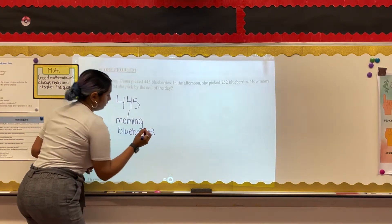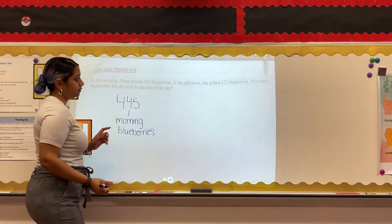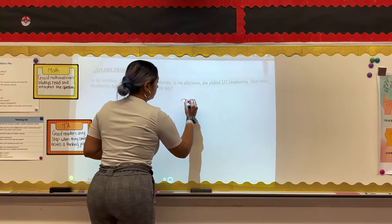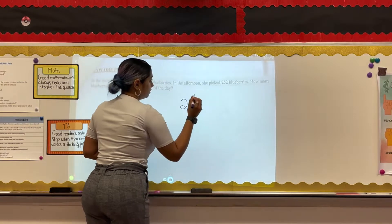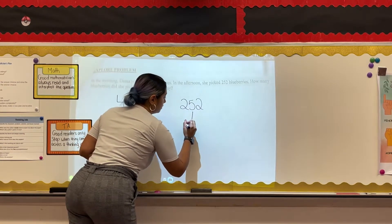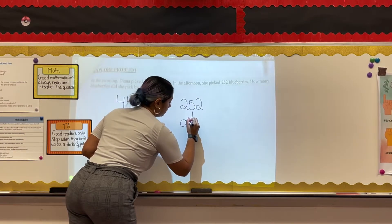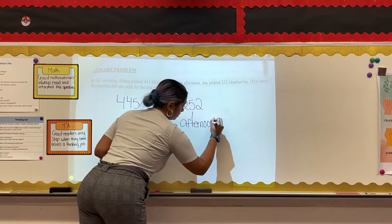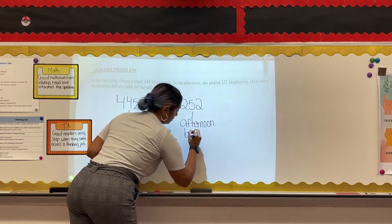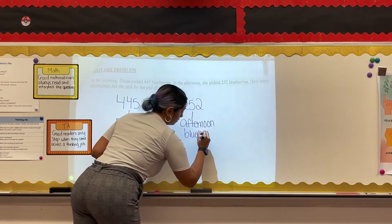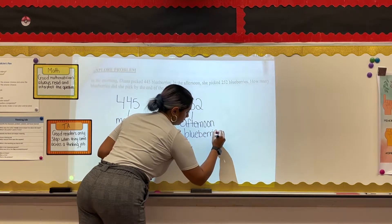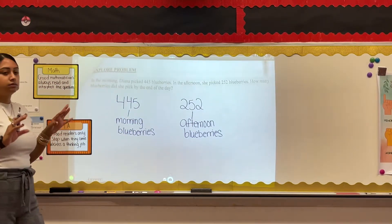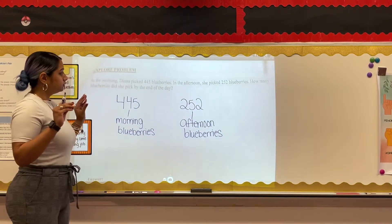I know that Diana is picking blueberries — she picks them in the morning and also in the afternoon. I need to know how many she picked all together. This problem is asking for the total blueberries she picked by the end of the day. So my plan is: morning blueberries = 445, afternoon blueberries = 252, and I'm going to add those together to get my total number of blueberries.